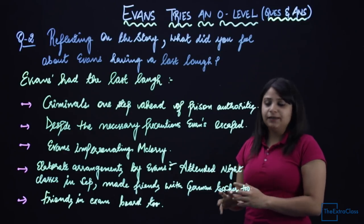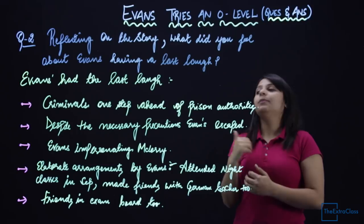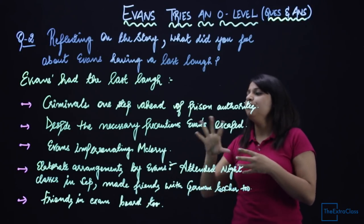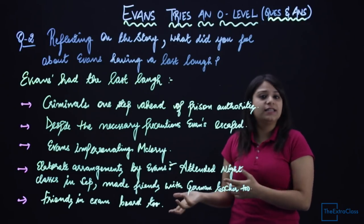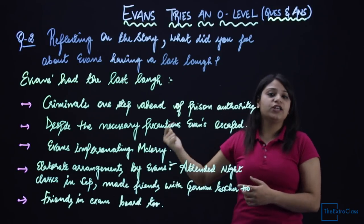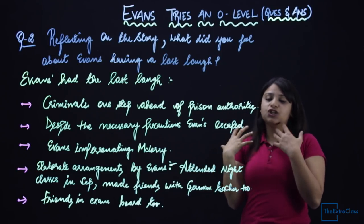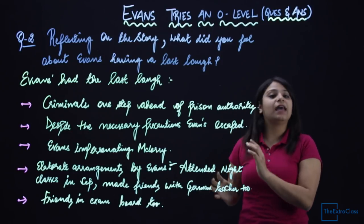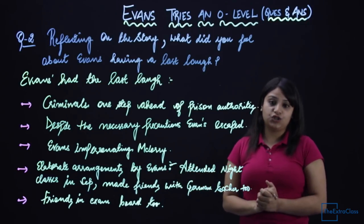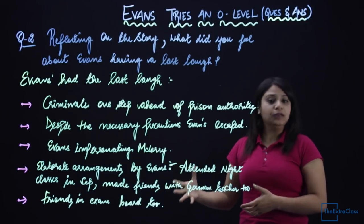He had many contacts and had made elaborate arrangements — he attended night classes in September, the German teacher was also his friend, and he had made friends with people in the examination board. This is definitely showing that criminals are one step ahead of prison authorities, and that is the reason for his last laugh — he is in a way mocking these authorities. These are the points you can elaborate using bullet points to answer this question, which is completely based on your reading skill.